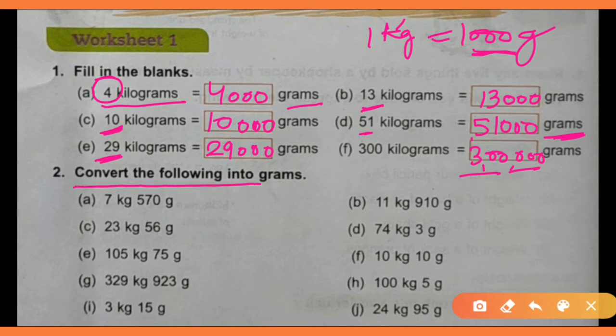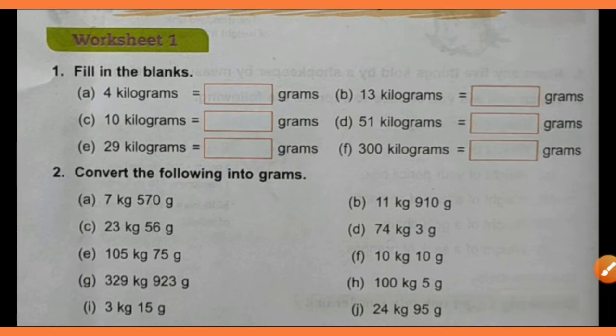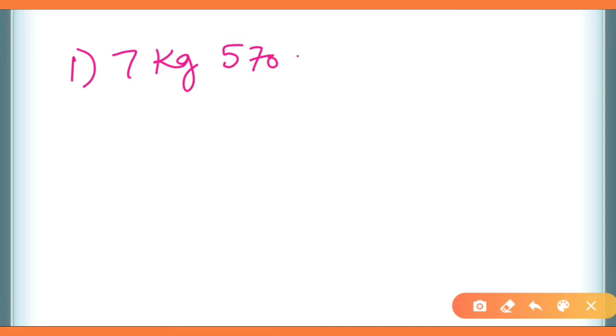Question number 2 — convert the following into grams. अब आपके पास जो weight दिया हुआ है, वो kilogram और gram दोनों units में है, लेकिन पूरे weight को grams में convert करना है। Let me explain — जैसे seven kilograms and five hundred seventy grams।